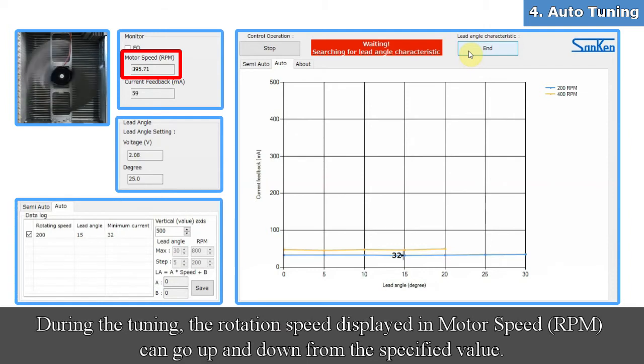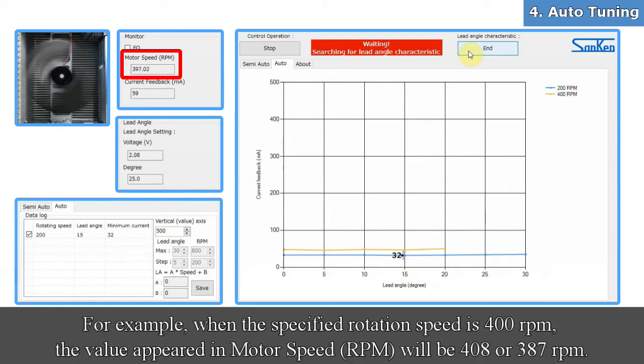During the tuning, the rotation speed displayed in motor speed can go up and down from the specified value. For example, when the specified rotation speed is 400 RPM, the value appeared in motor speed will be 408 or 387 RPM.